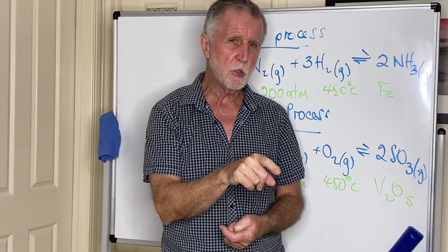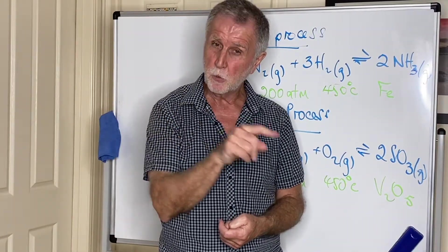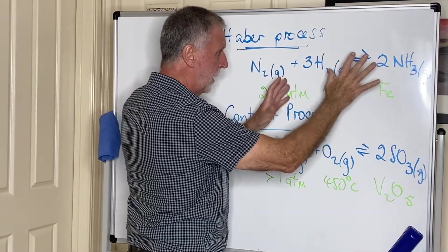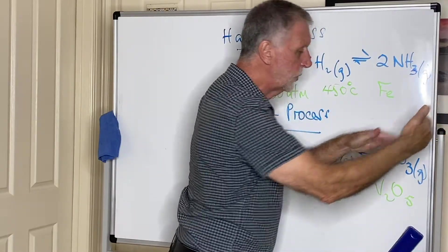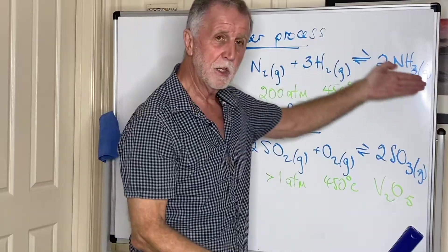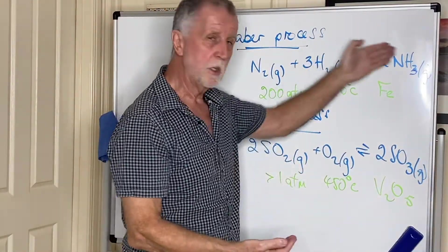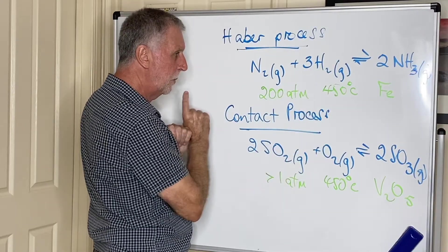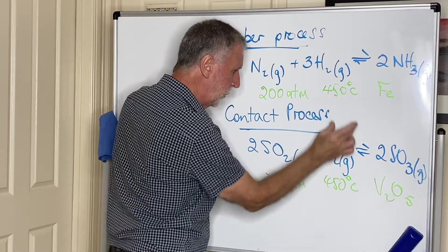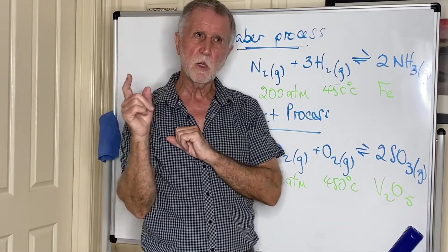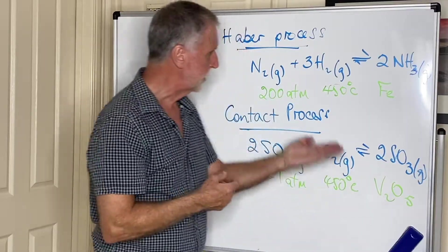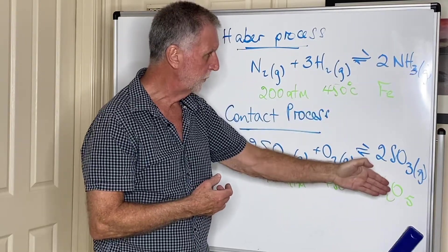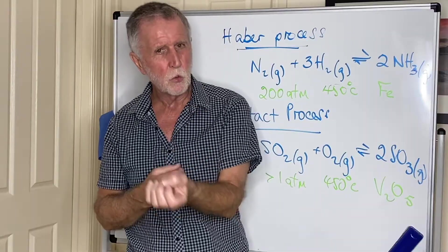Le Chatelier says that if you make a change to a system in equilibrium, the system will shift to oppose you. So if I'm going to increase the pressure on this, then the system will shift to the right to reduce the pressure by making less gas, hence a better yield of ammonia. The forward reaction for both of these is exothermic, so you might say, well, why use high temperature? Because high temperature favors an endothermic process, so that clearly doesn't favor the formation of the product.